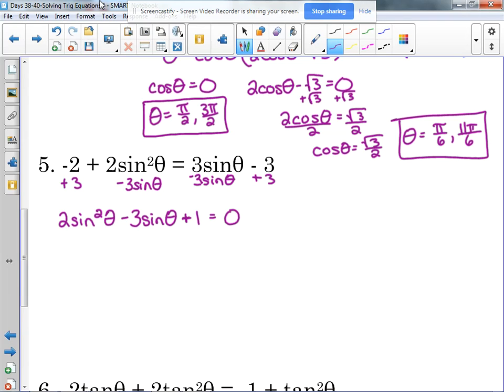So with factoring, if it's not a GCF and it's got three terms, we've got to resort to two sets of parentheses. What times what equals two sine squared of theta? Well, that would be two sine of theta times sine of theta. What times what equals one? We're lucky there. I only got one choice. One times one.